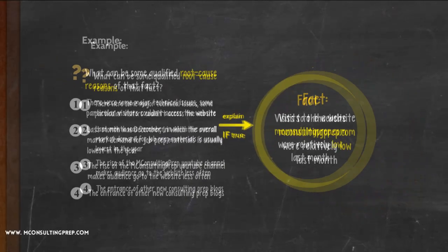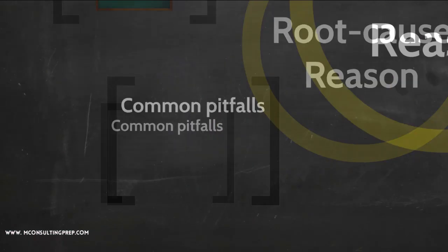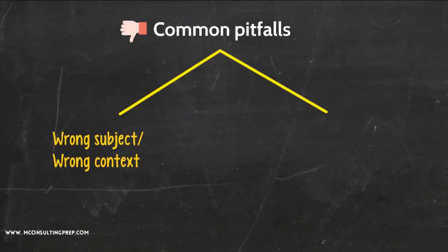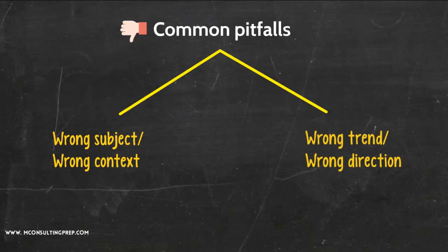Now let's explain some common pitfalls. What makes a statement not a potential reason for a particular fact? Well, there are two ways here. Wrong subject, or wrong context, and wrong trend, or wrong direction.